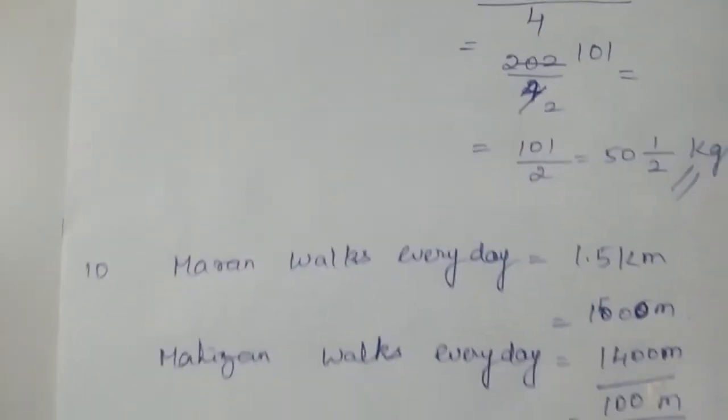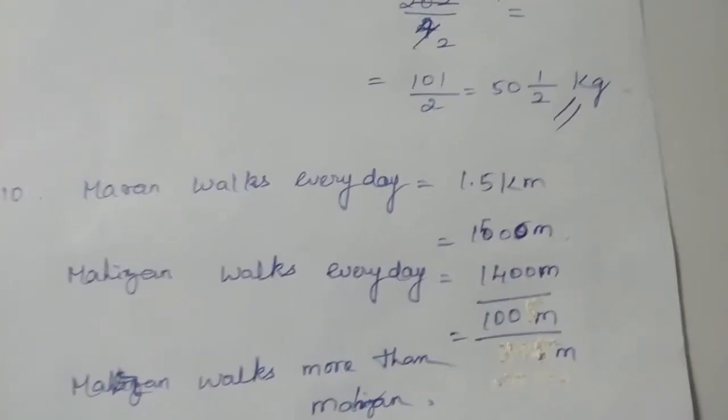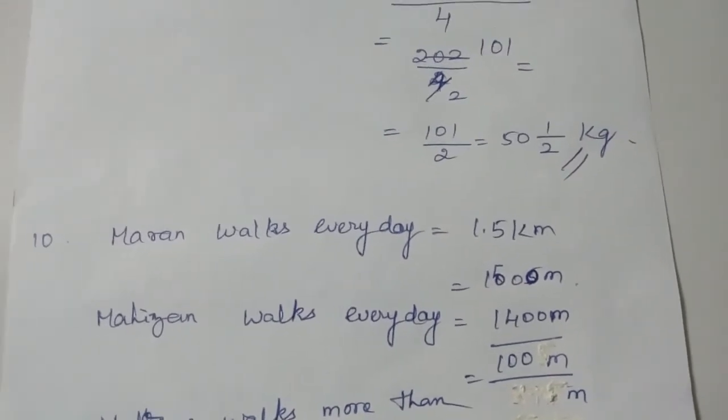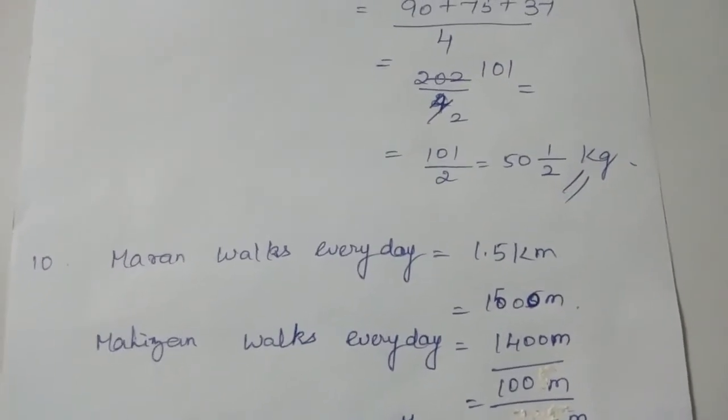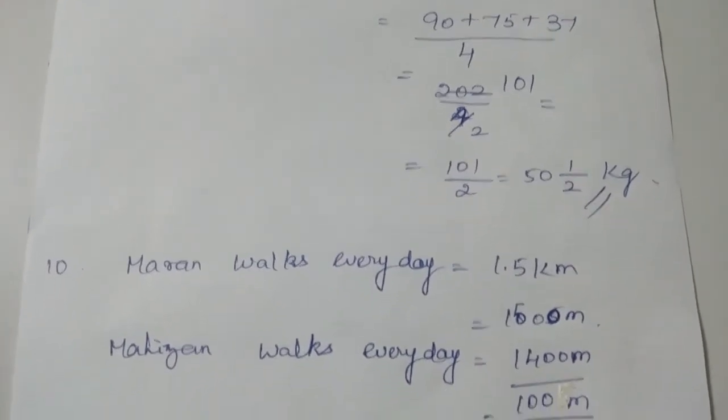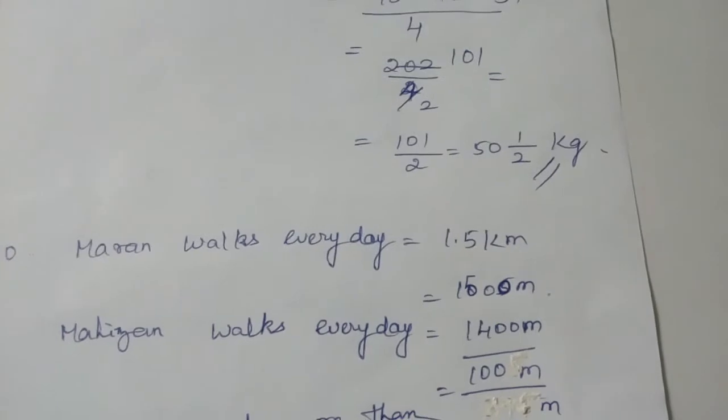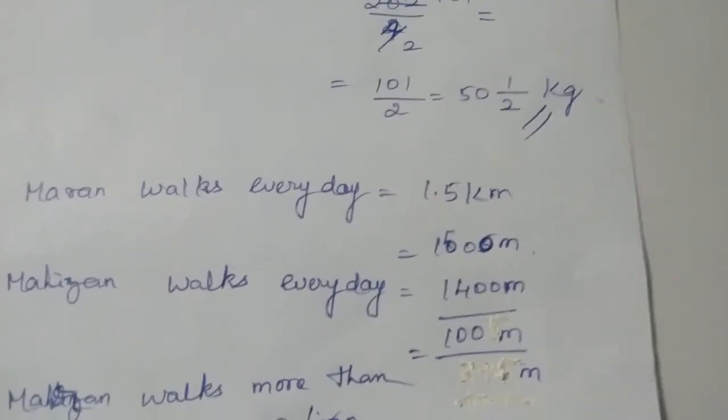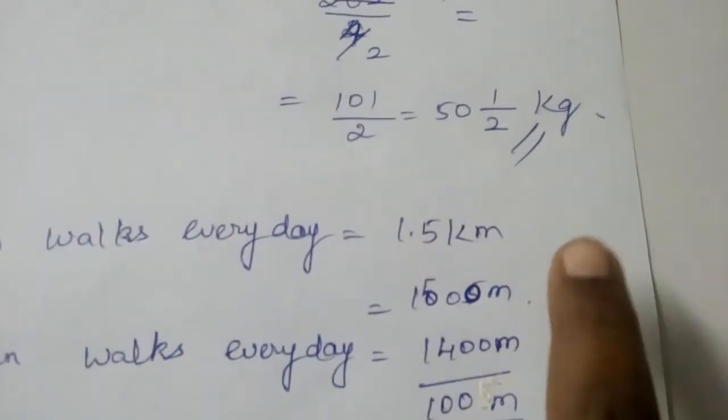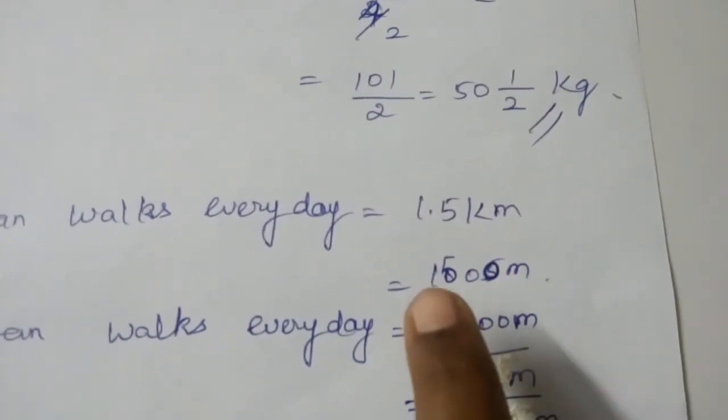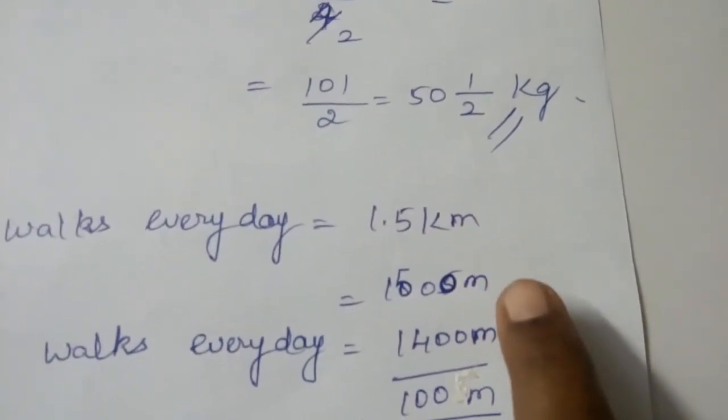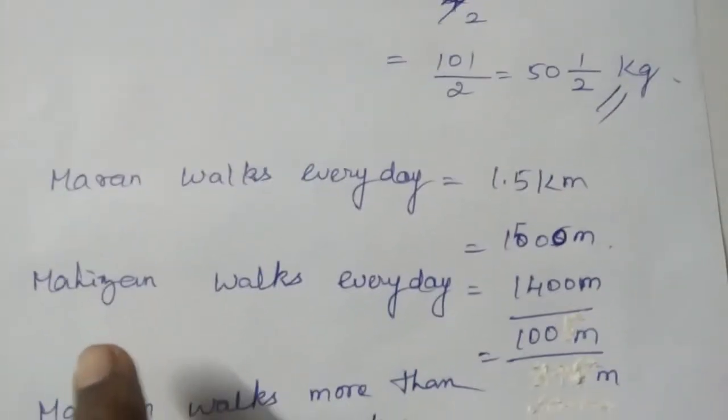Then the last question is the 10th question. Maran walks 1.5 km every day to reach the school while Mahijan walks 1400 m. Who walks more distance and by how much? The distance he walks is 1.5 km. 1 km equals 1000 m. So when you multiply by 1000 you will be getting 1500 m because we are changing km into m. Then Mahijan walks every day, it is given already in terms of m, that is 1400 m.